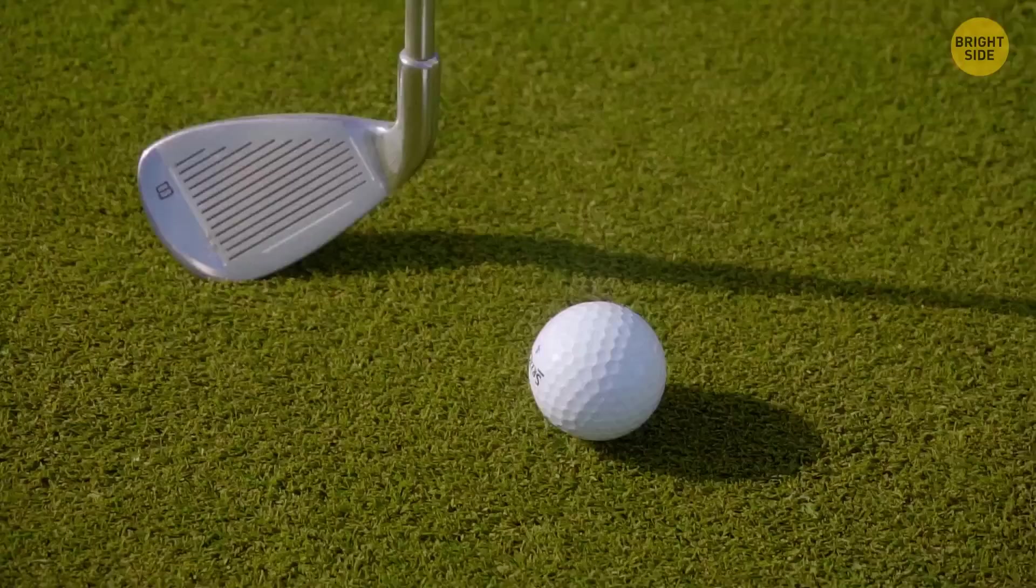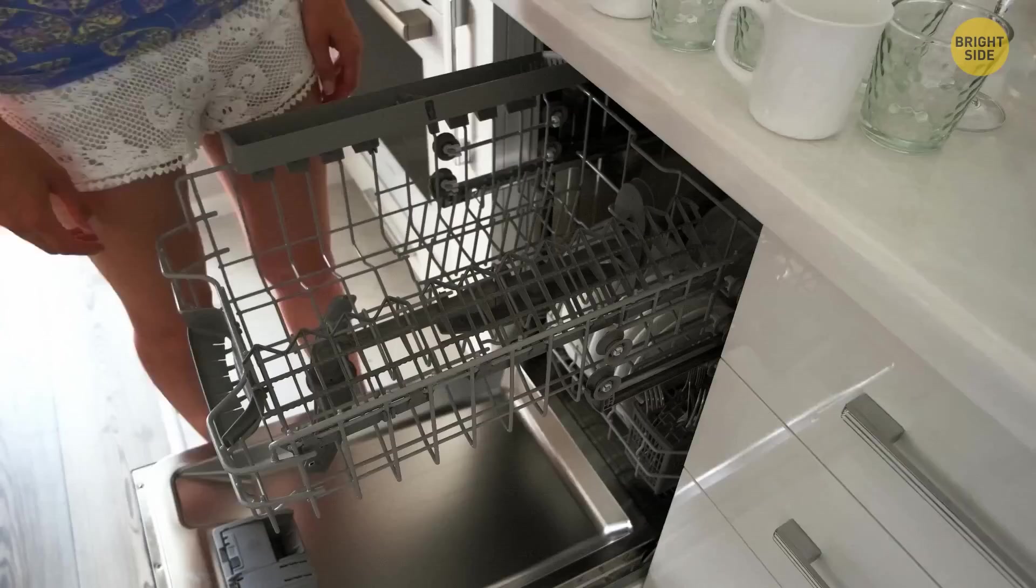Some mugs have a little groove at the outside of the bottom. It helps water flow out and prevents it from accumulating when the cup is in the dishwasher.